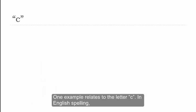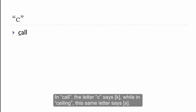One example relates to the letter C. In English spelling, this letter does not have a consistent pronunciation. In call, the letter C says K, while in ceiling, the same letter says S.